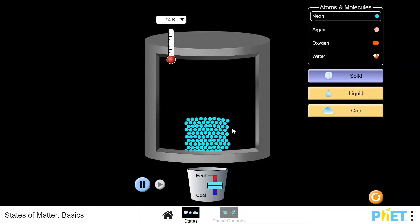In the simulation, we see neon atoms at 14 Kelvin, which is the equivalent of negative 259 degrees Celsius. Even at this low temperature, the atoms of neon are vibrating, moving about their position.